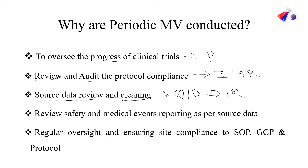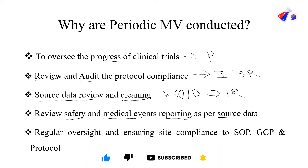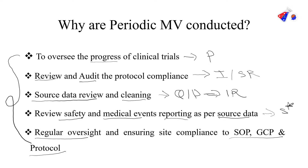There would also be a review of safety events — adverse events and SAEs — and whether they are properly reported as per the source data. That is a critical aspect of safety. Additionally, there is regular oversight ensuring that the site is in compliance with SOPs, GCP, and the appropriate protocol. This is a significant part of the trial, which is why monitoring visits must be conducted periodically.